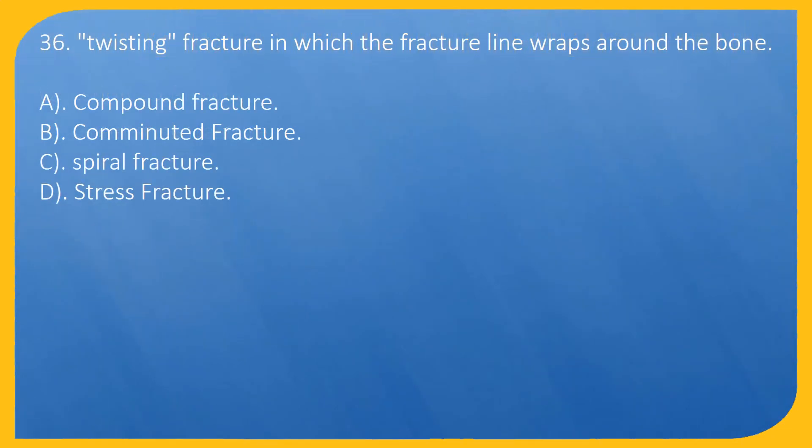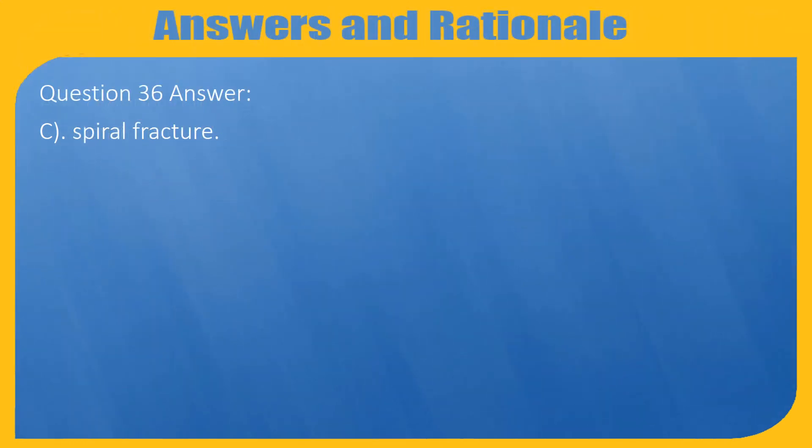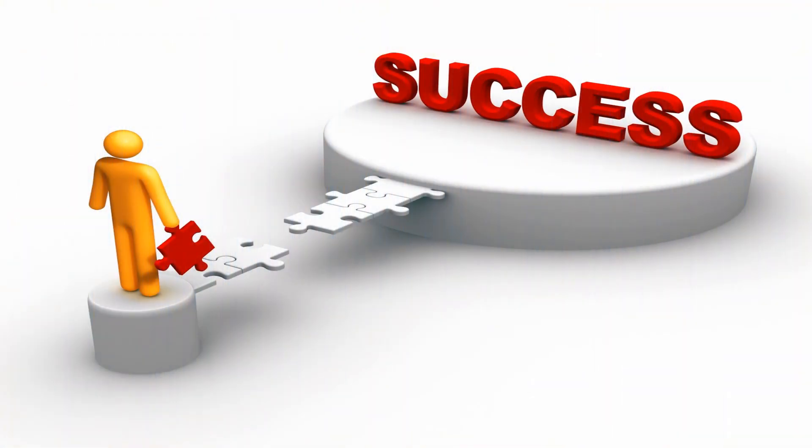Question 36. Twisting fracture in which the fracture line wraps around the bone: A. Compound Fracture, B. Comminuted Fracture, C. Spiral Fracture, D. Stress Fracture. Question 36 Answer: C. Spiral Fracture.